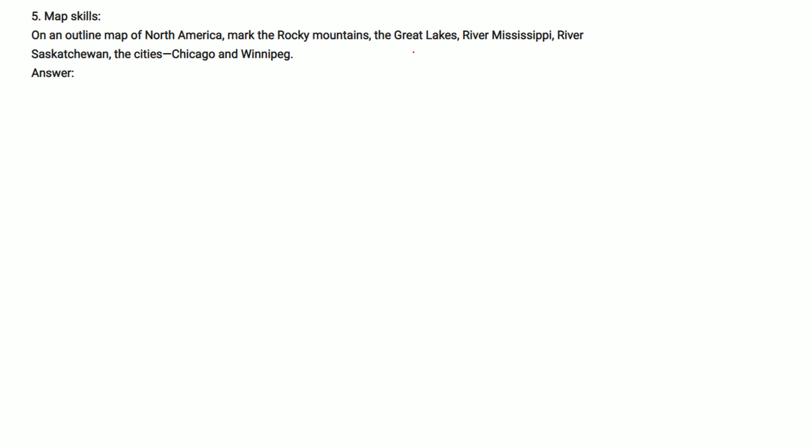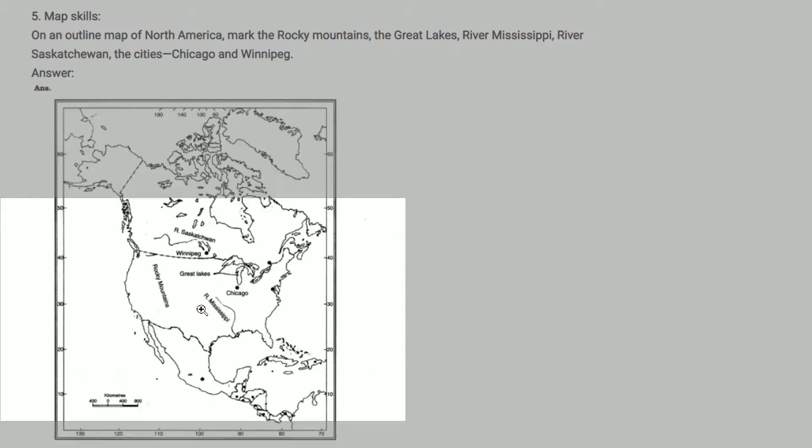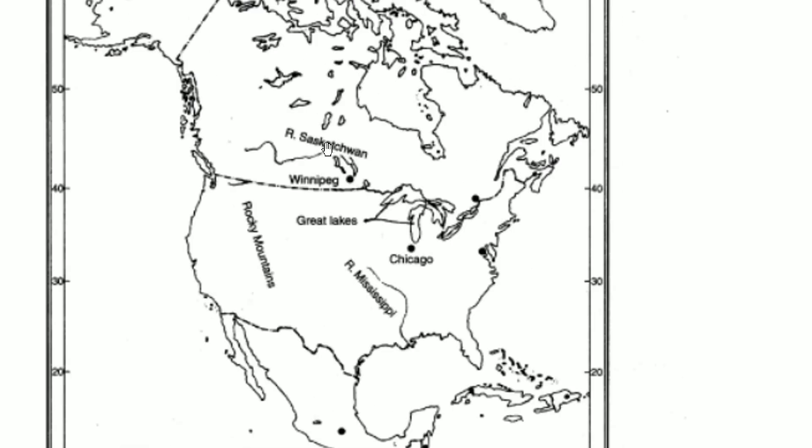On the outline map of North America, mark the Rocky Mountains, the Great Lakes, River Mississippi, River Saskatchewan, and the cities Chicago and Winnipeg. Here we have River Saskatchewan, Winnipeg, Rocky Mountains, Great Lakes, Chicago, and River Mississippi marked on the map.